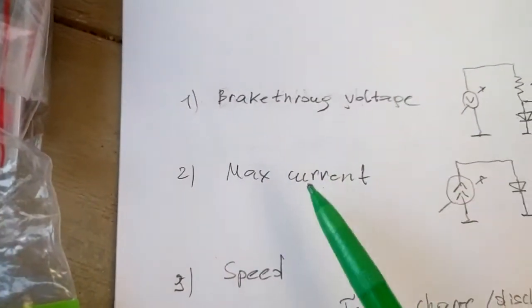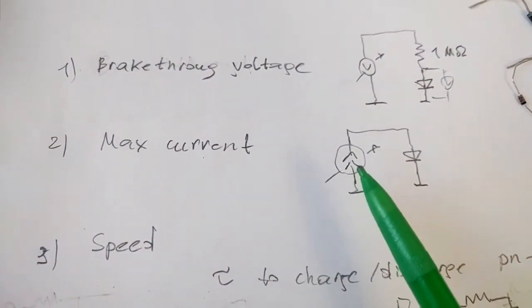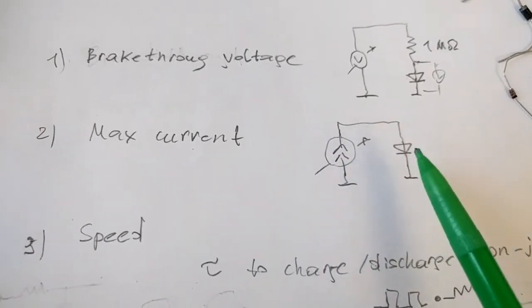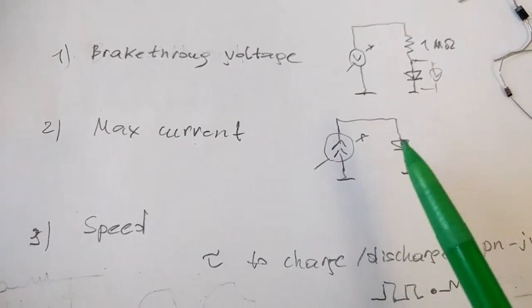The second thing is the maximum current. Again, we have to have the power supply where we can control the current, and then we can see what current actually has the magical smoke coming from this device.